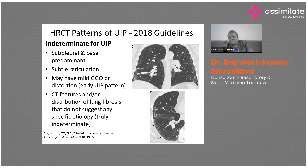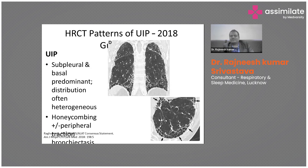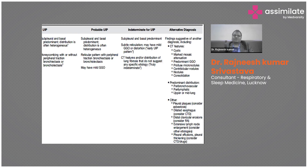The third category is indeterminate for UIP, meaning it does not have honeycombing and does not have other typical features. It may have subpleural basal predominant subtle reticulation, mild ground glass opacities, or CT features and distribution lacking fibrosis that do not suggest any specific etiology — truly indeterminate.